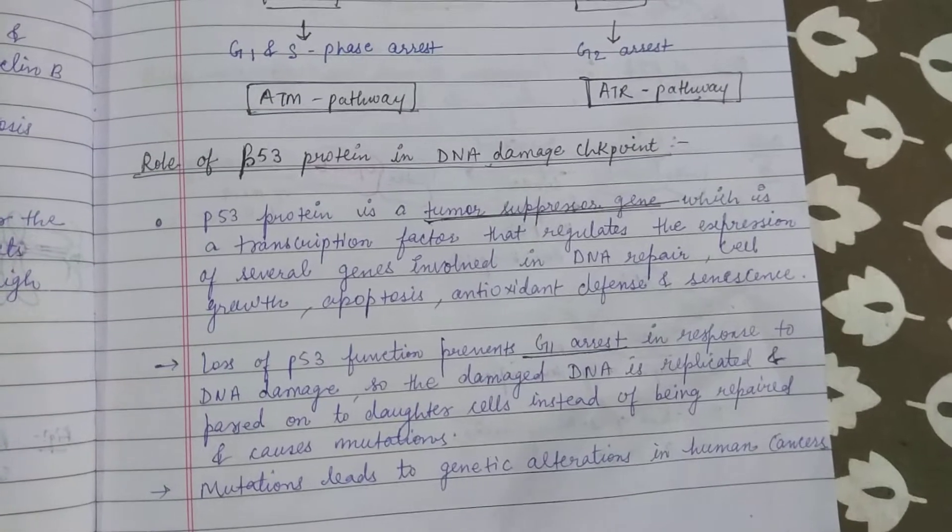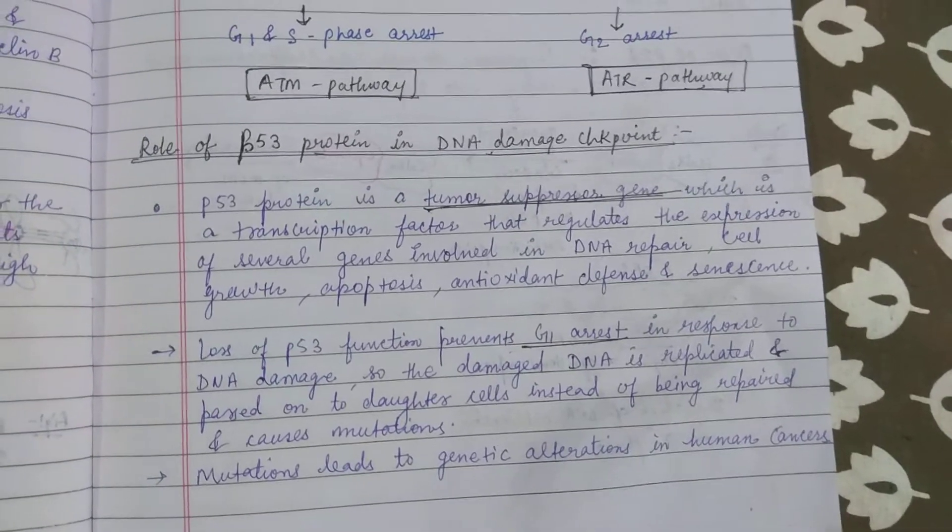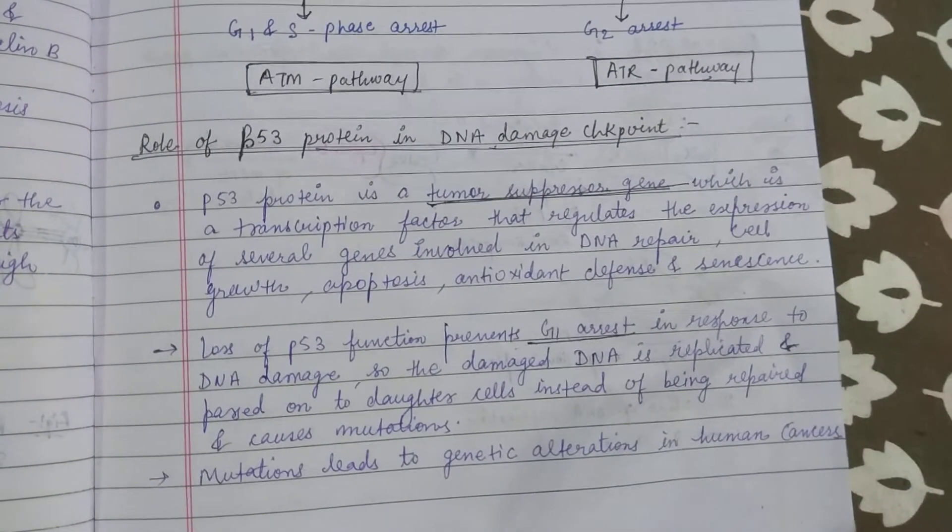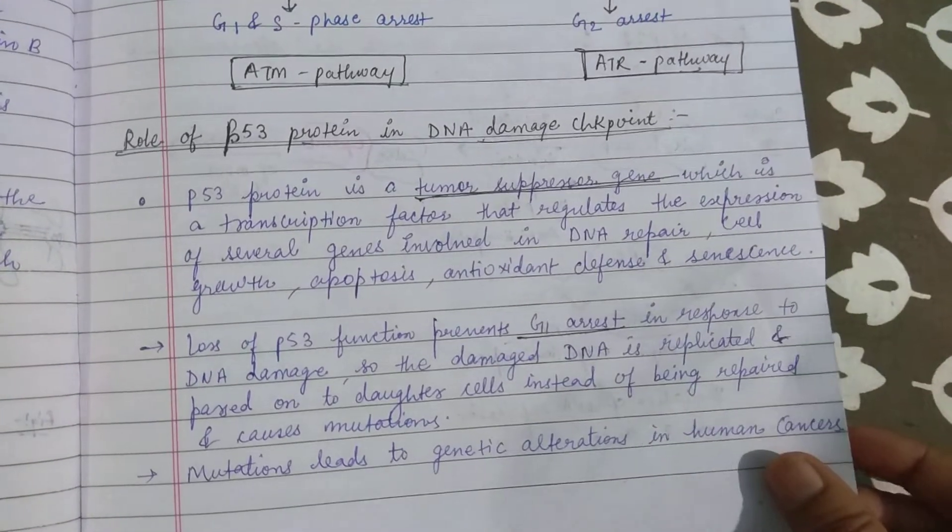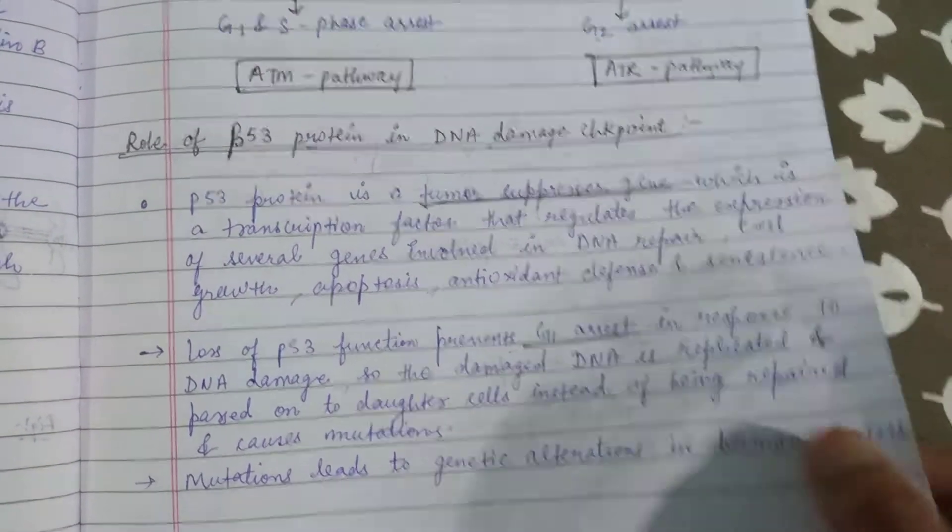Then we see the role of P53 protein in DNA damage checkpoint. This is a tumor suppressor gene which upon inactivation leads to tumor cells in the body. This causes G1 arrest.